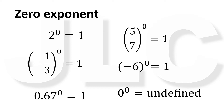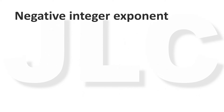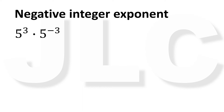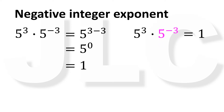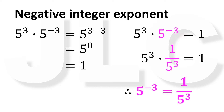Now let's define the meaning of negative integer exponents. Let's say we have 5 cubed times 5 raised to negative 3. By the property of product of powers, this is 5 raised to 3 minus 3, which equals 5 raised to 0, and we know that 5 raised to 0 is 1. So 5 cubed times 5 raised to negative 3 equals 1. For this equation to be true, 5 raised to negative 3 must be the reciprocal of 5 cubed, which is 1 over 5 cubed, because any non-zero number multiplied by its reciprocal equals 1.